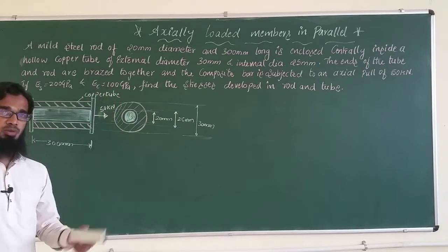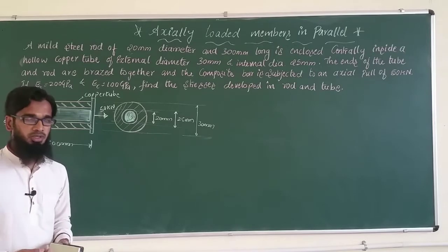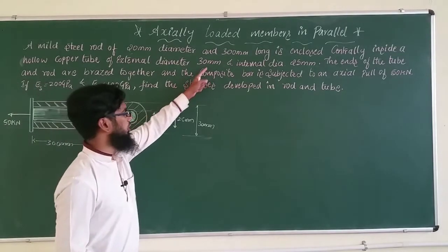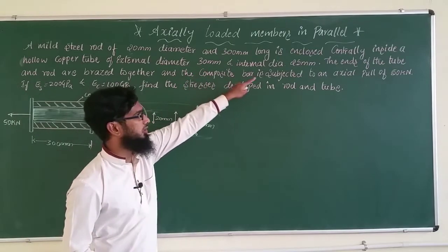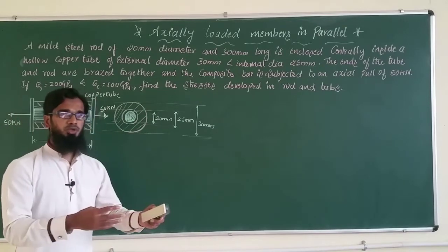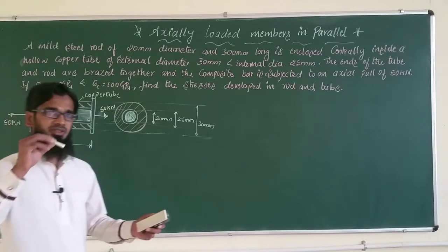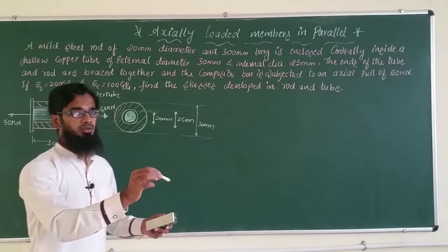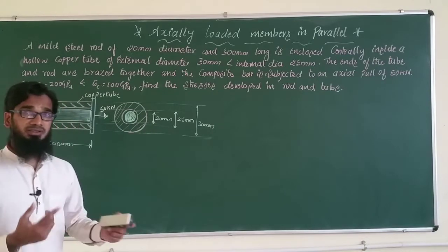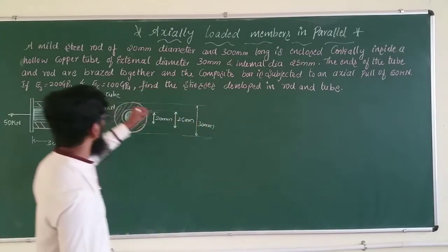The hollow copper tube has an outside diameter of 30 mm and an internal diameter of 25 mm. Inside that hollow copper tube, we are placing a steel rod, and both the lengths are the same.